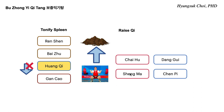Danggui helps Cai Hu to clear heat and counteracts Renzen, Baiju, and Wang Qi because they are too warming — so it adds a little bit of water as a counteraction. Chen Pi treats secondary coexisting symptoms: when the spleen is deficient, qi stagnation commonly develops, especially in the epigastric area, so dyspepsia is a very common sign of spleen qi deficiency — that is the reason we use Chen Pi.